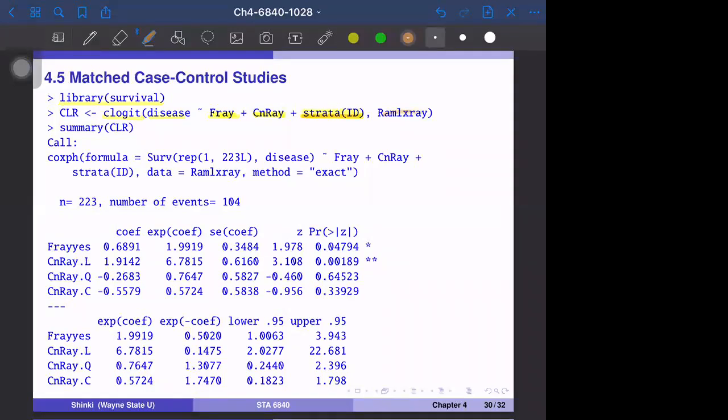Then summary gives here. We have two factors: F-ray is the binary predictor, F-ray is no or yes, with no as the baseline. F-ray equal to yes has higher probability of malignant disease case. The second factor, CN-ray, has four levels: 1, 2, 3, 4.